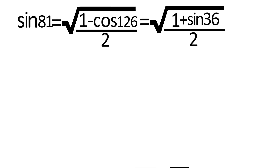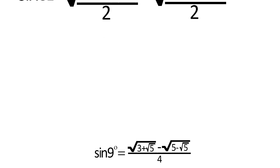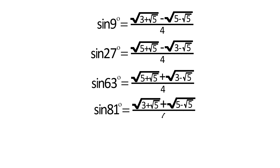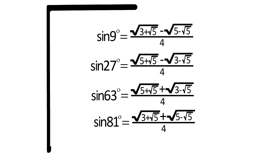And also, sin 81° = √((1 − cos 162°) / 2), which equals √((1 + cos 18°) / 2). After putting the value of cos 18°, we get sin 81° = (1/4)√(3 + √5) + √(5 − √5), which is also equal to cos 9°.